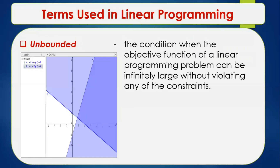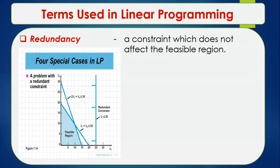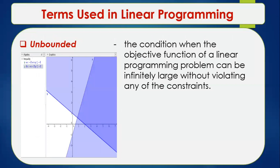Redundancy is a constraint that does not affect the feasible region. As shown in the figure, the redundant constraint appears as a vertical line that does not change the feasible region boundary. Unboundedness is the condition when the objective function of a linear programming problem can grow infinitely large without violating any constraints — meaning the feasible region itself is infinitely large.